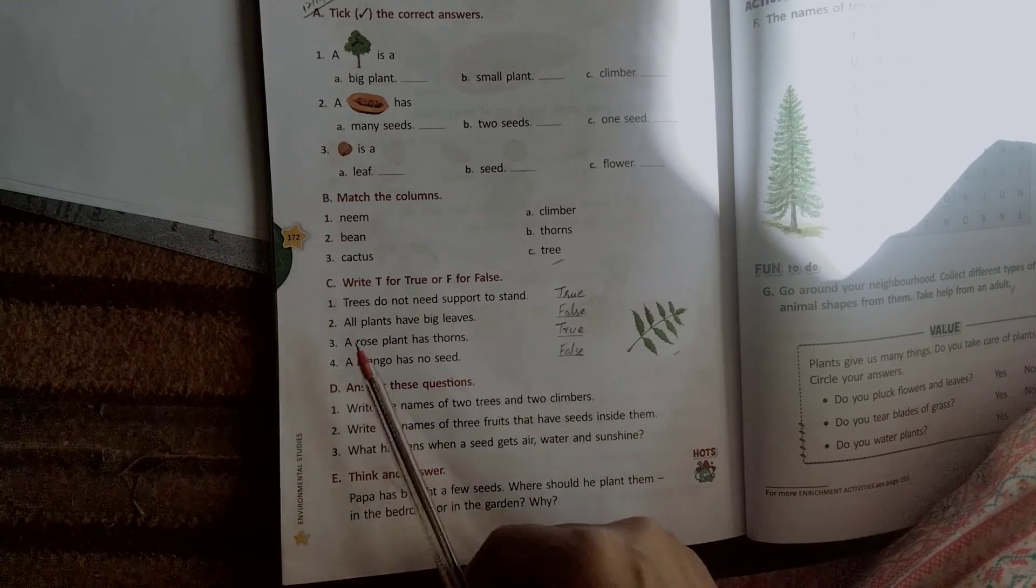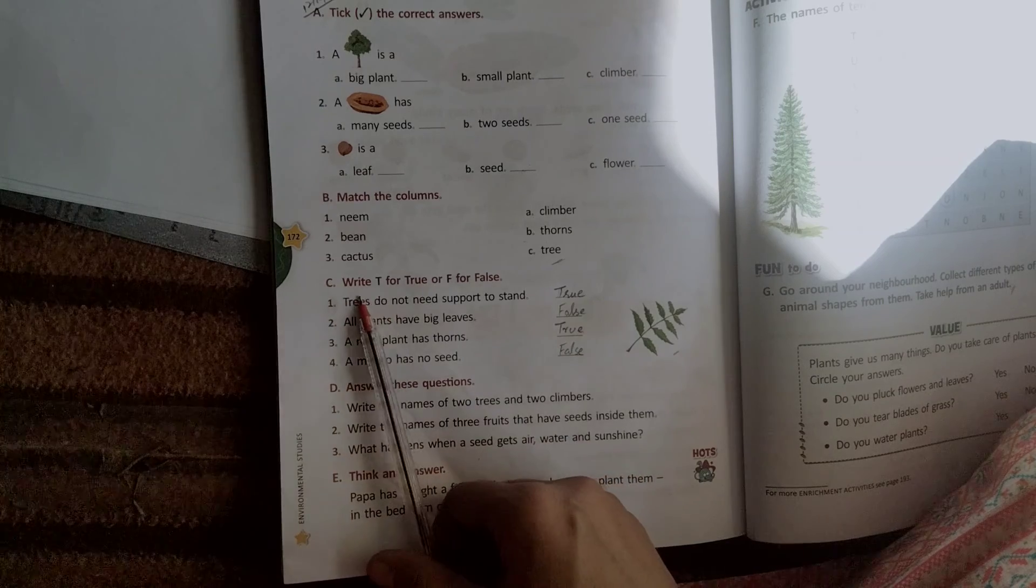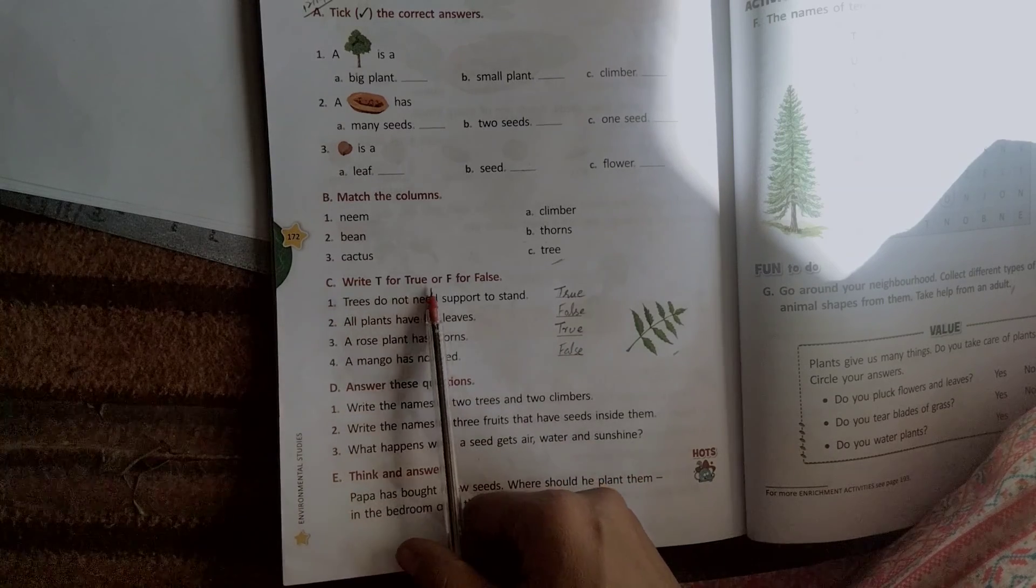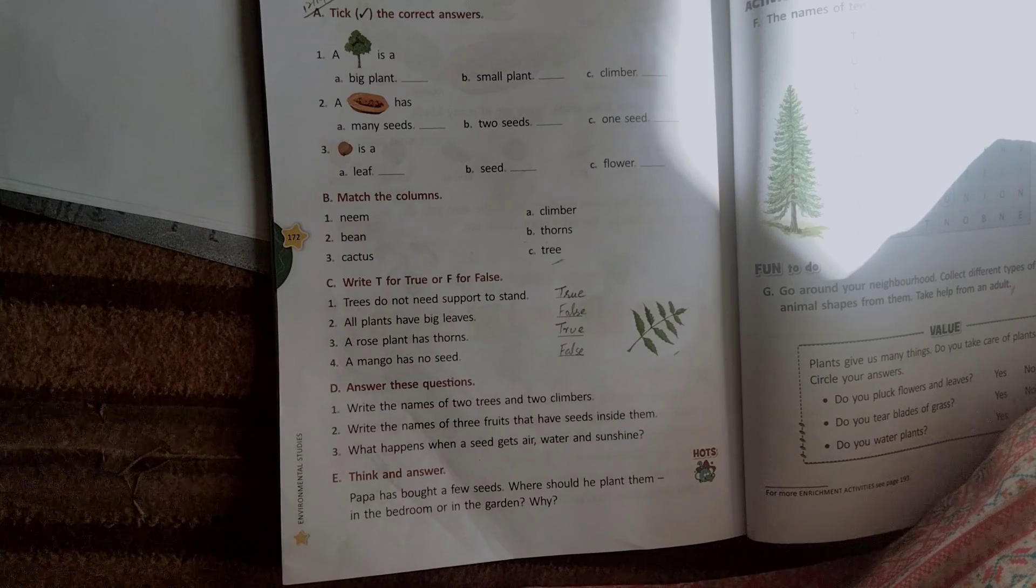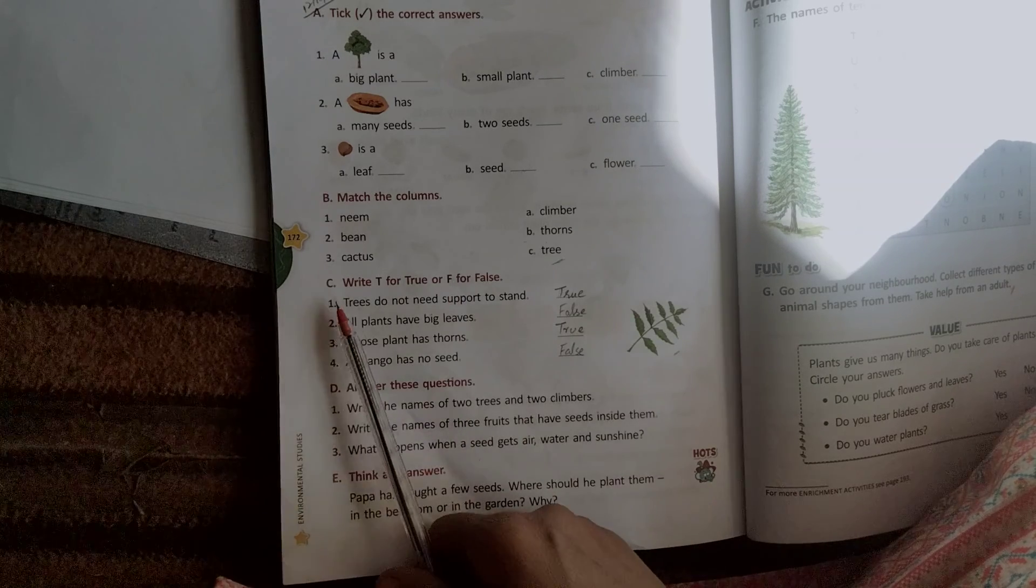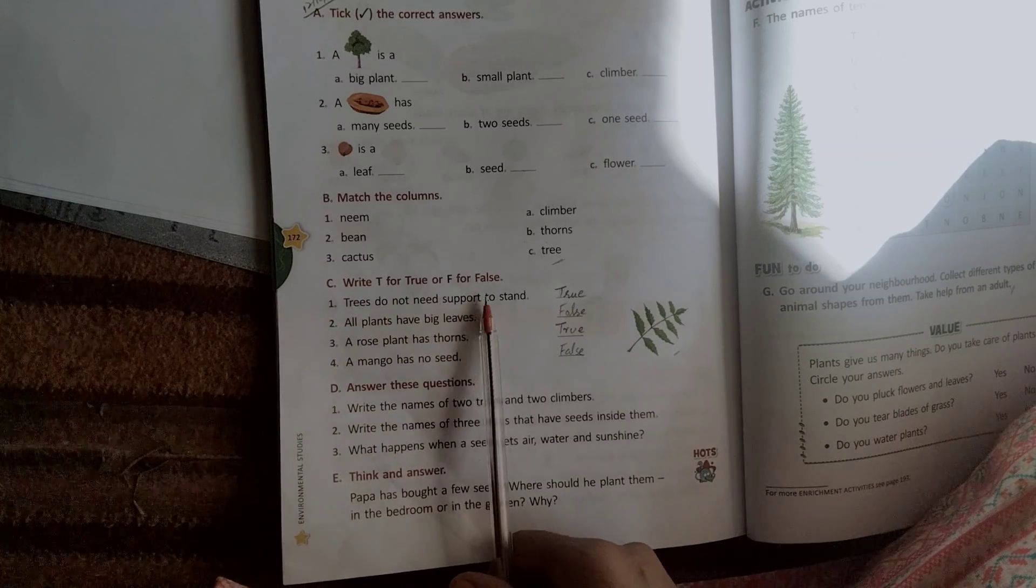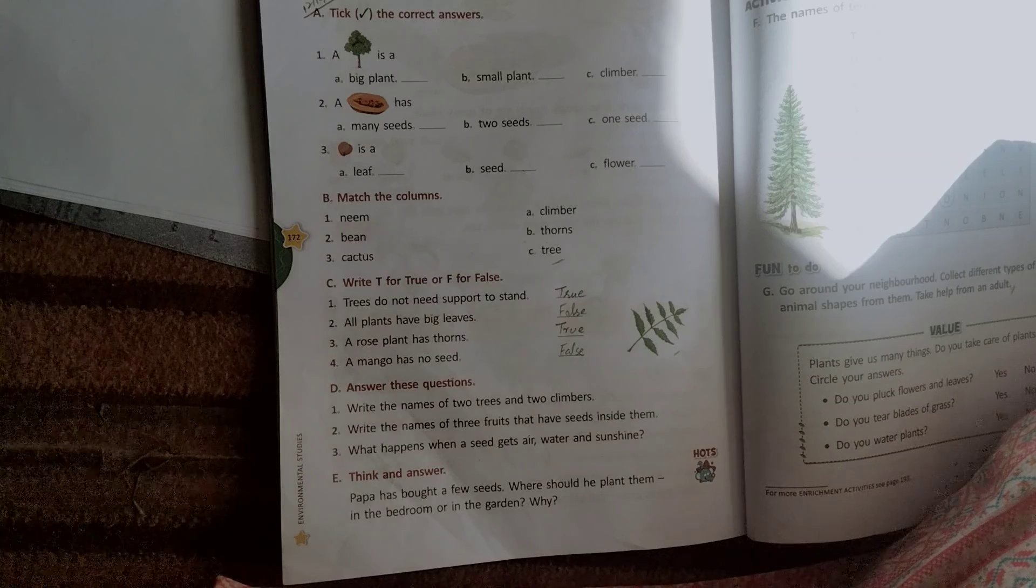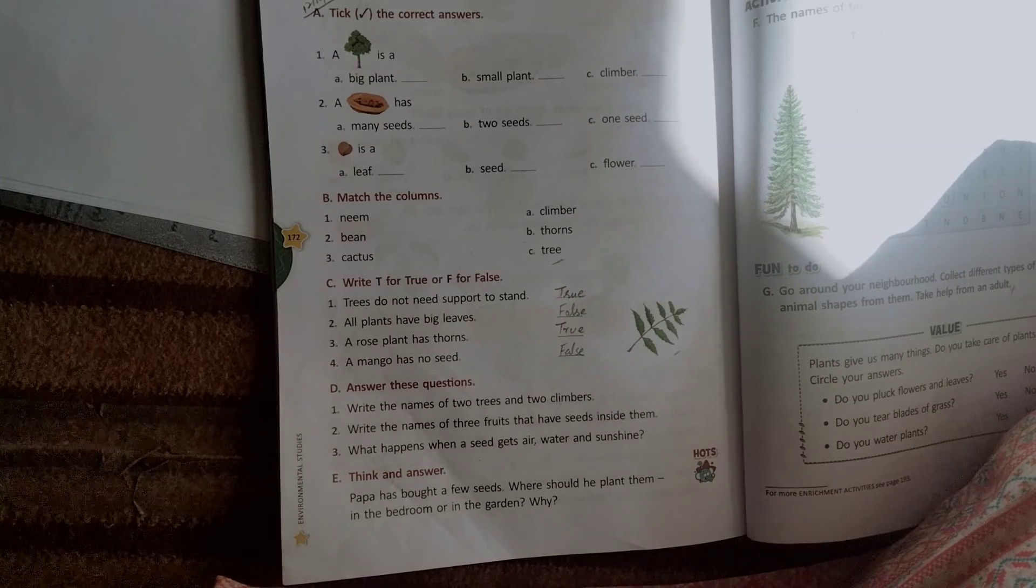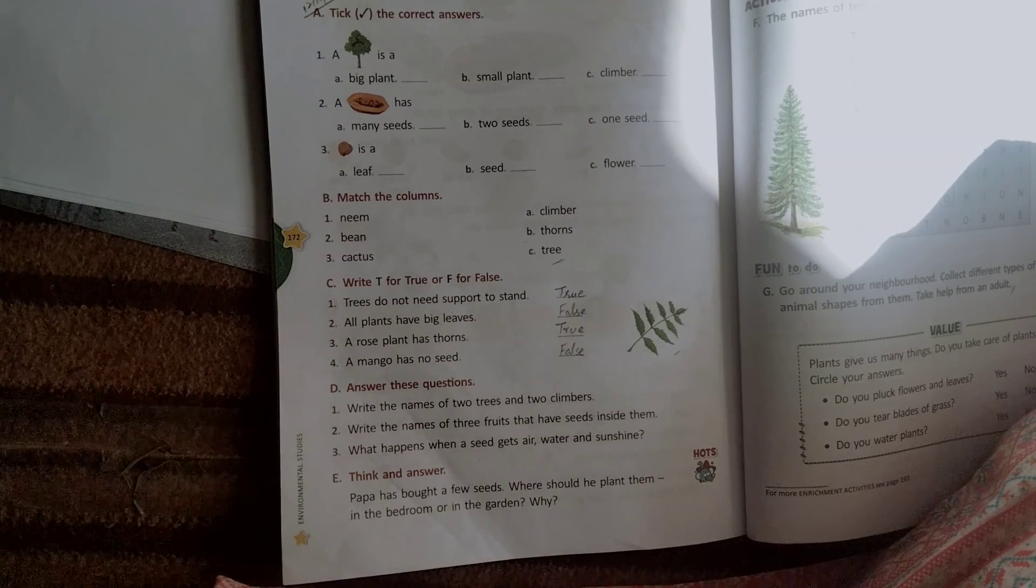See, write T for true, F for false. If it is true, then T. If it is false, then F. First, trees don't need support to stand. The tree doesn't need support to stand. So this is true.